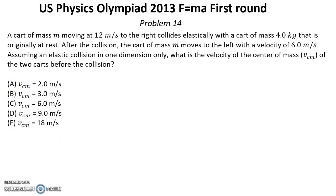Problem number 14. A cart of mass m moving at 12 meters per second to the right collides elastically with a cart of mass 4 kg that is originally at rest. After the collision the cart of mass m moves to the left with a velocity of 6 meters per second. Assuming an elastic collision in one dimension only, what is the velocity of the center of mass of the two carts before the collision?